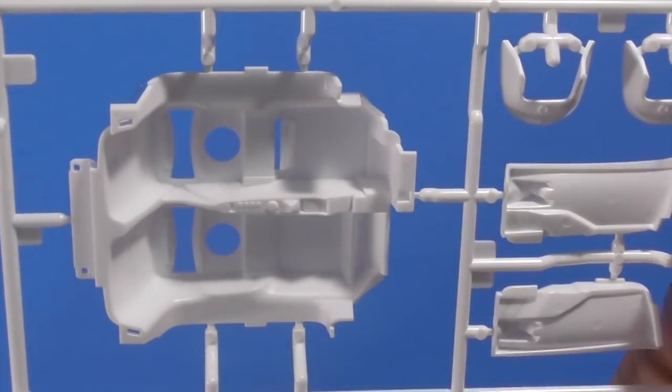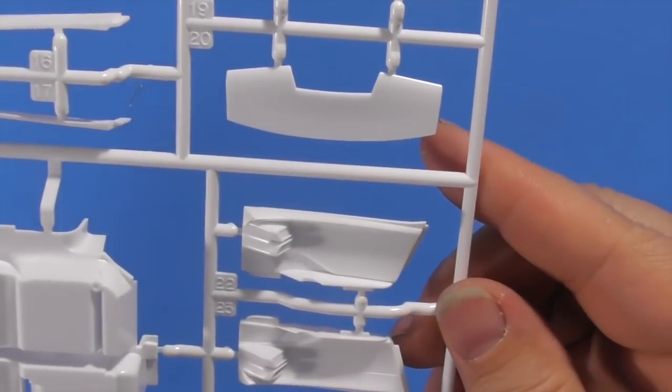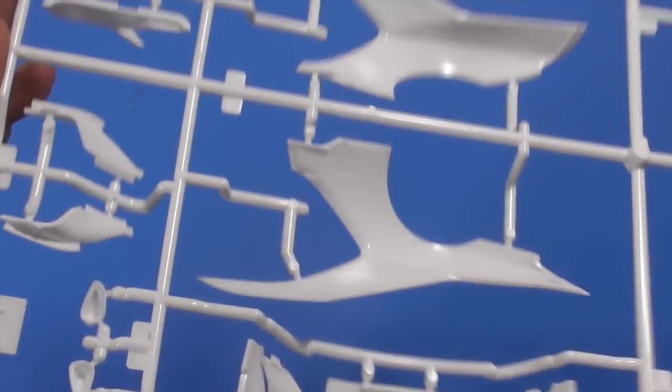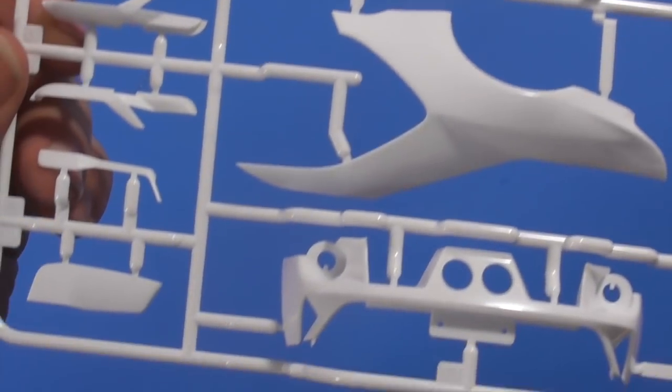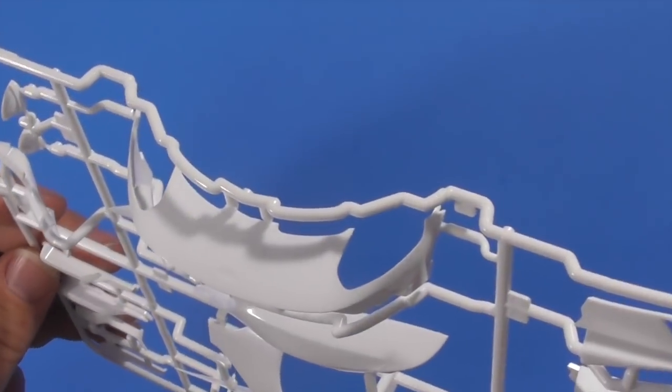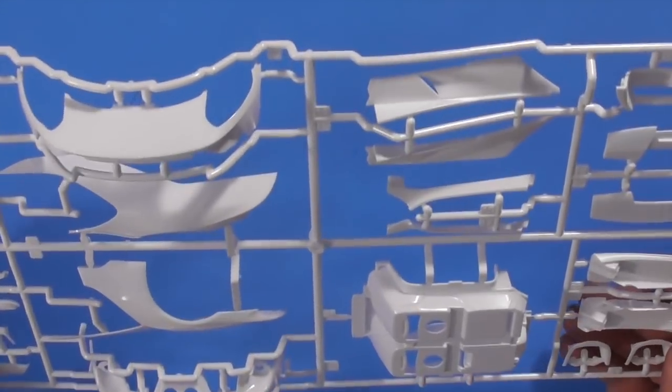So check out the interior tub, the nice center console with all the raised buttons. Door panels, both sides. Back of the seat rests, side panels. Most of you who know this car know that there's actually an opening from the main body to the side panel where air blows through.